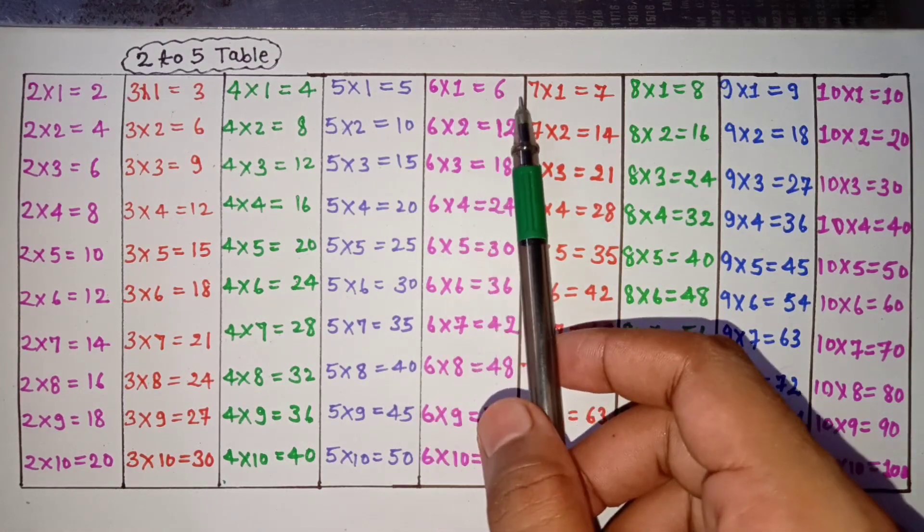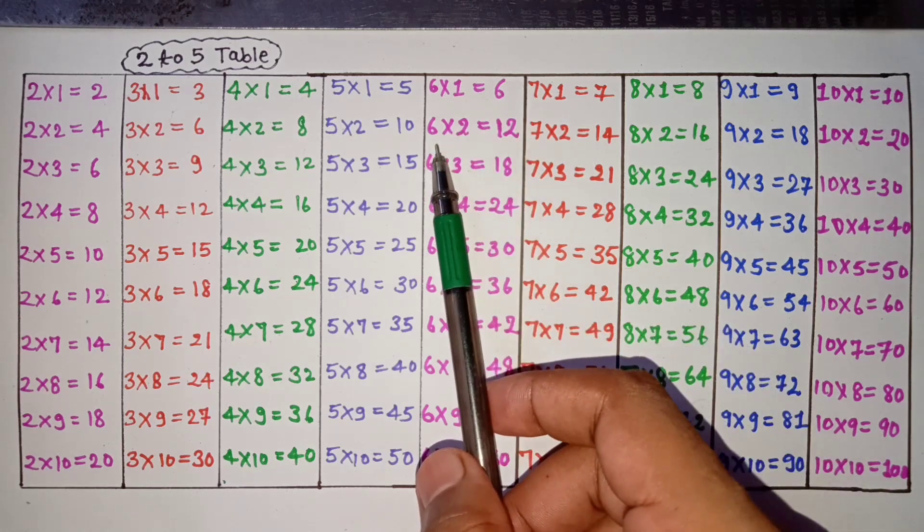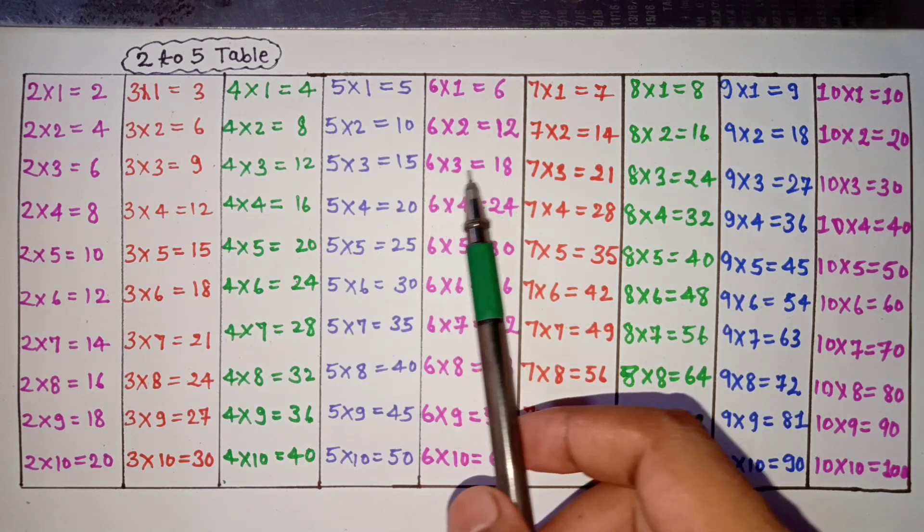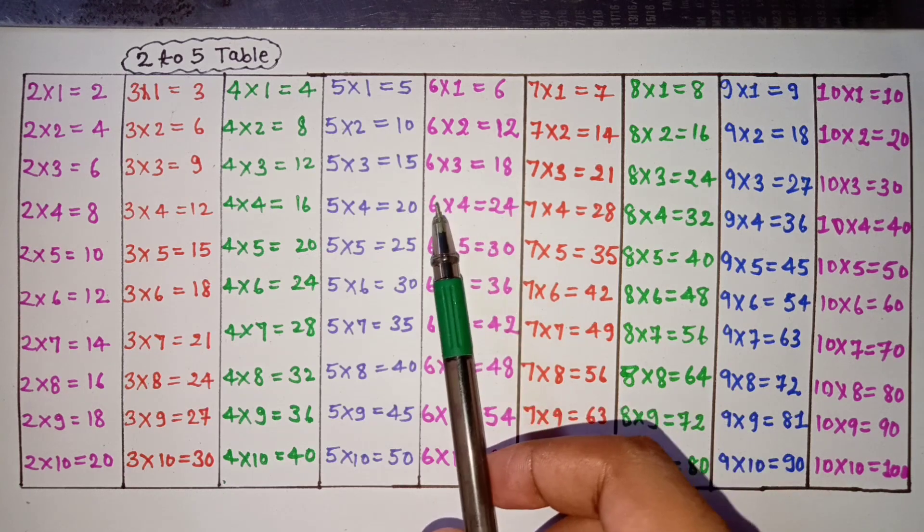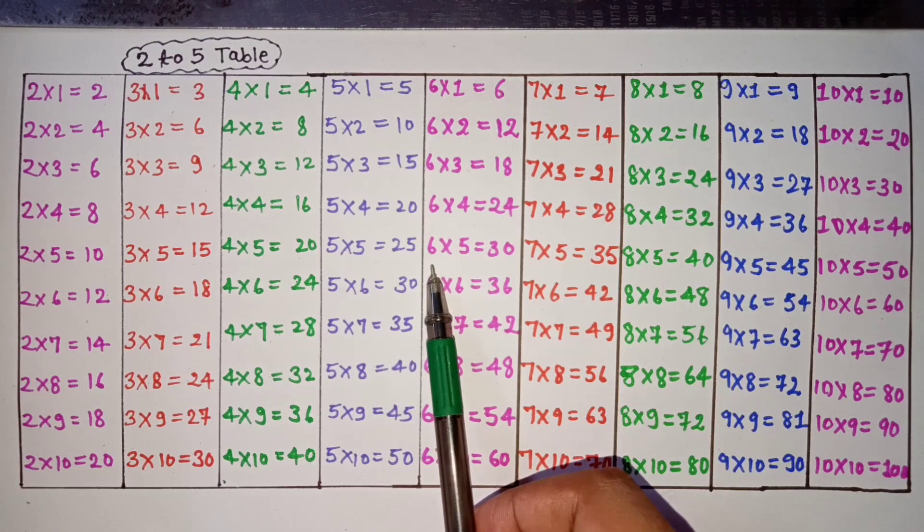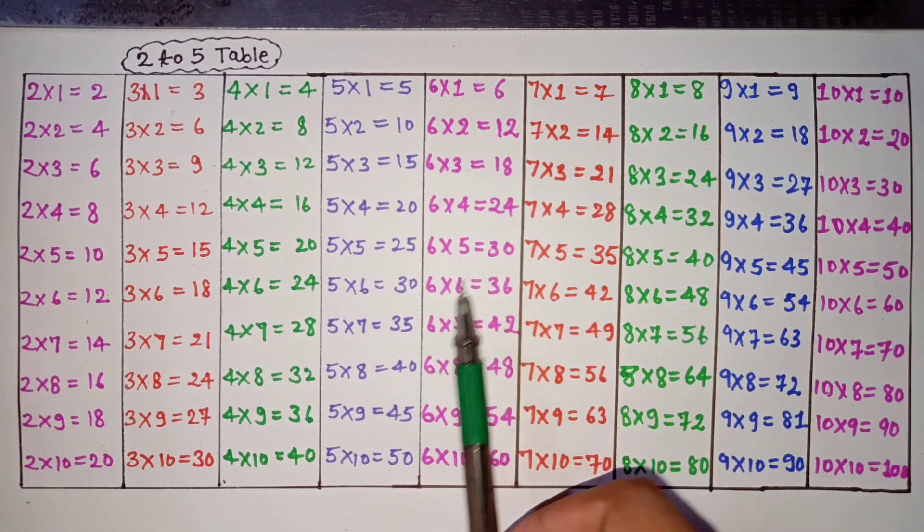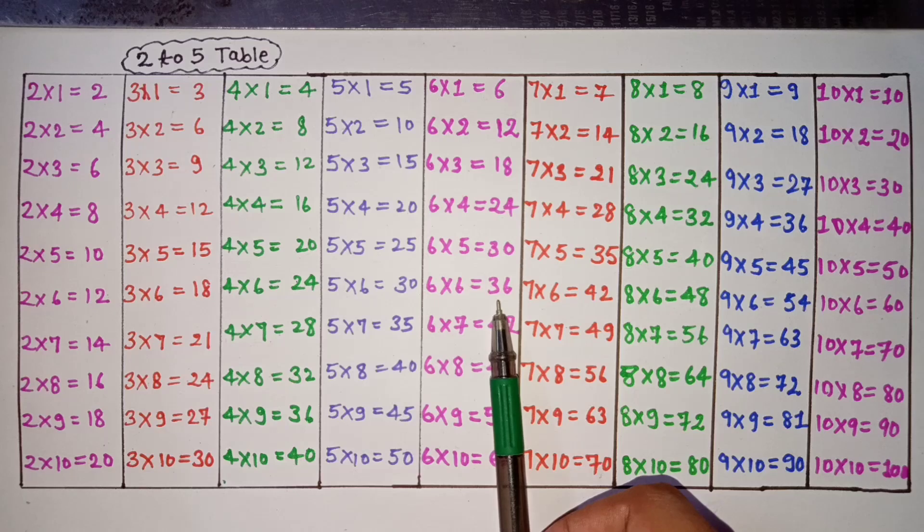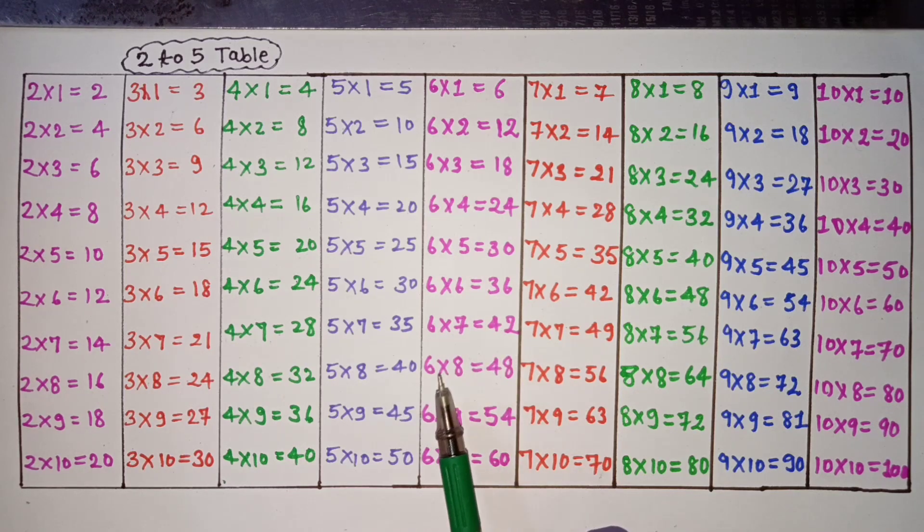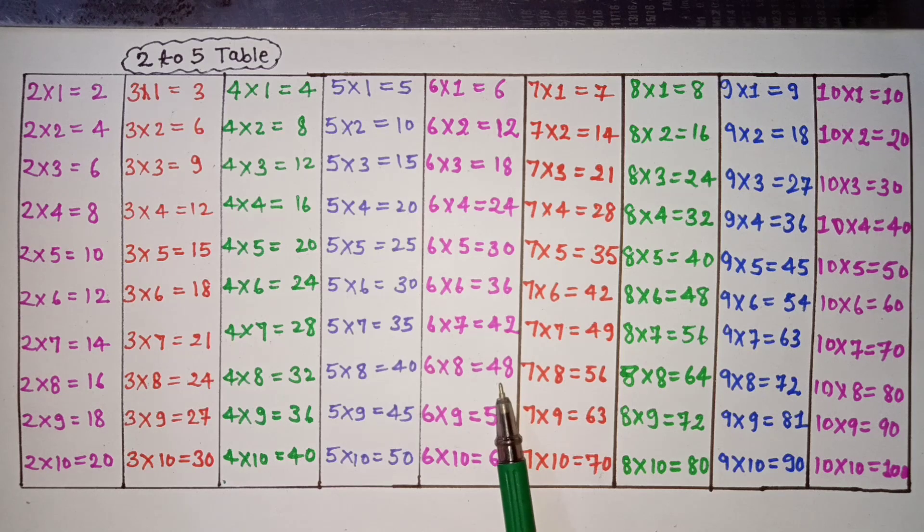6 ones are 6, 6 twos are 12, 6 threes are 18, 6 fours are 24, 6 fives are 30, 6 sixes are 36, 6 sevens are 42, 6 eights are 48, 6 nines are 54, 6 tens are 60.